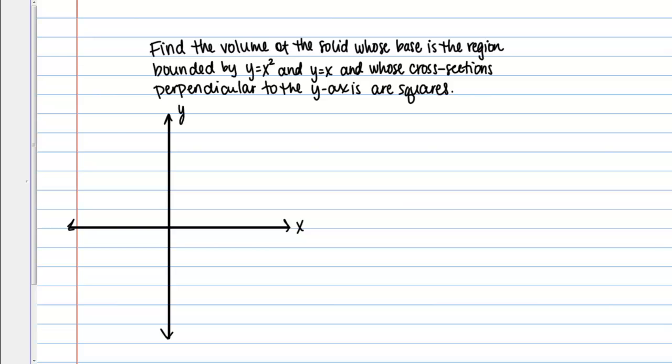Y equals x squared is just a basic parabola that goes to the origin, and then y equals x is just a line with slope 1 that also goes to the origin. So something like this.